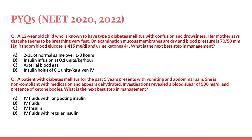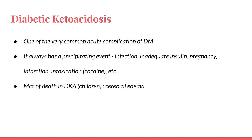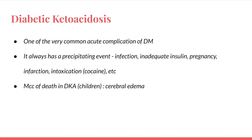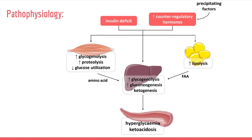Diabetic ketoacidosis is one of the most common acute complications of diabetes mellitus. It always has a precipitating event — which could be infection, inadequate insulin, pregnancy, infarction, or intoxication such as cocaine. The most common cause of death in DKA, particularly in children, is cerebral edema.